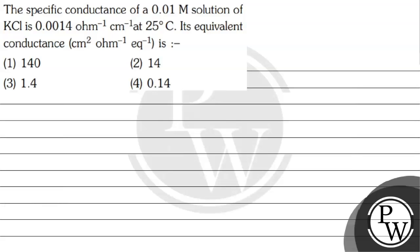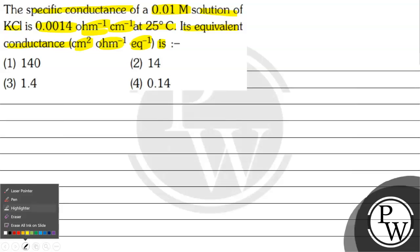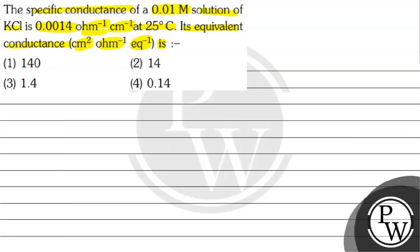Let's read this question. The question says: specific conductance of a 0.01 molar solution of KCl is 0.0014 ohm inverse centimeter inverse at 25 degrees Celsius. Its equivalent conductance in centimeter squared ohm inverse equivalent inverse is: option 1: 140, option 2: 14, option 3: 1.4, option 4: 0.14.